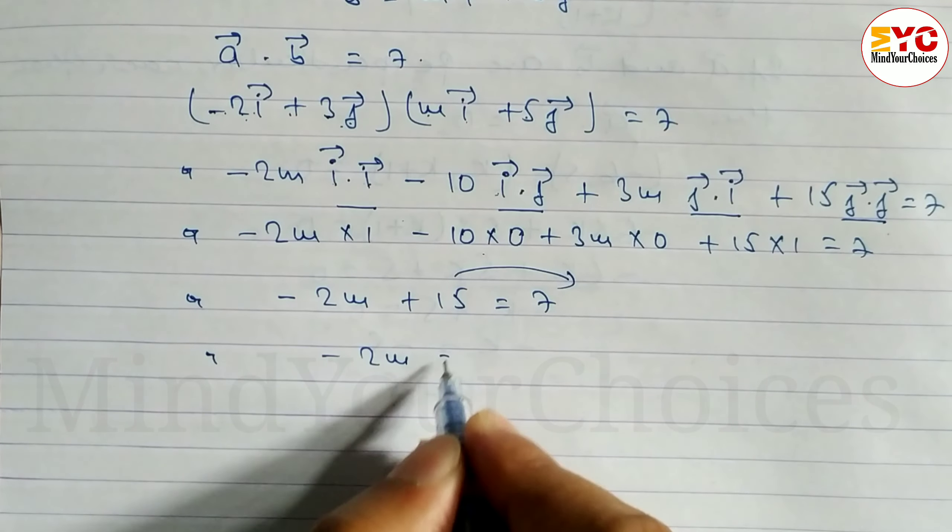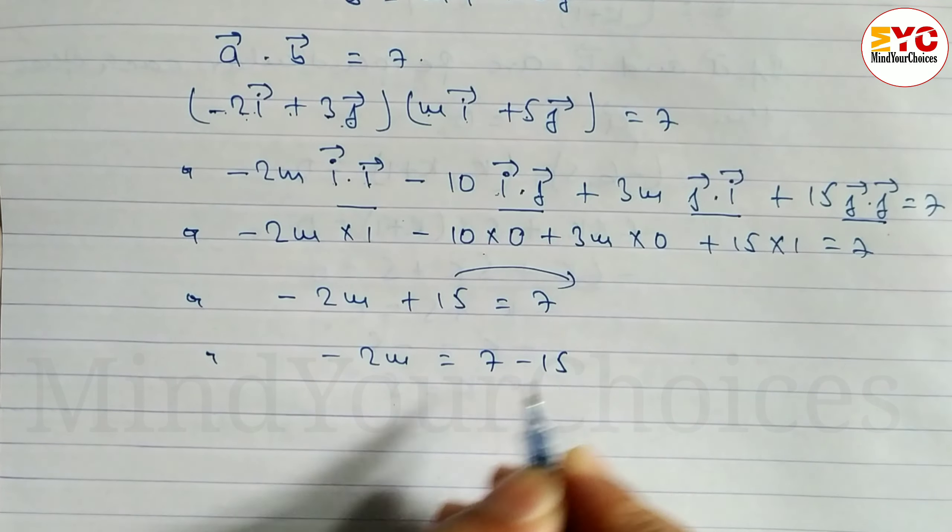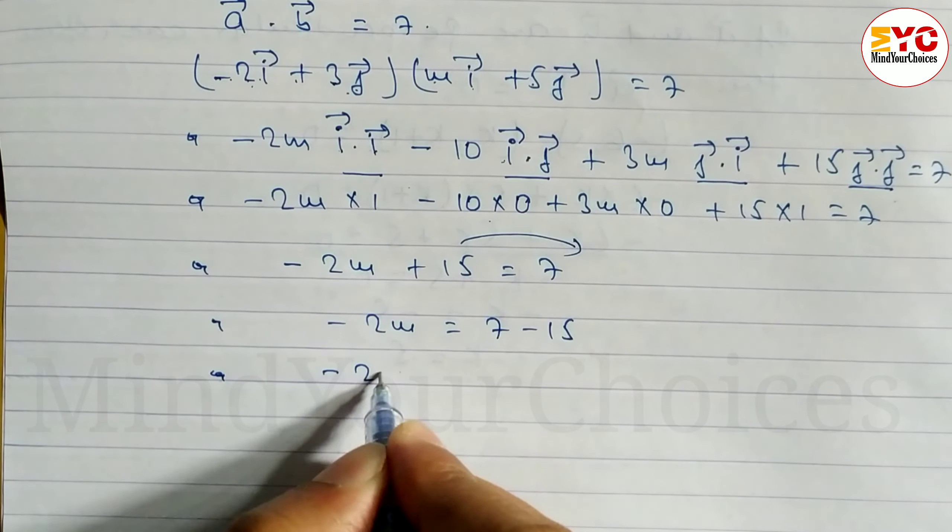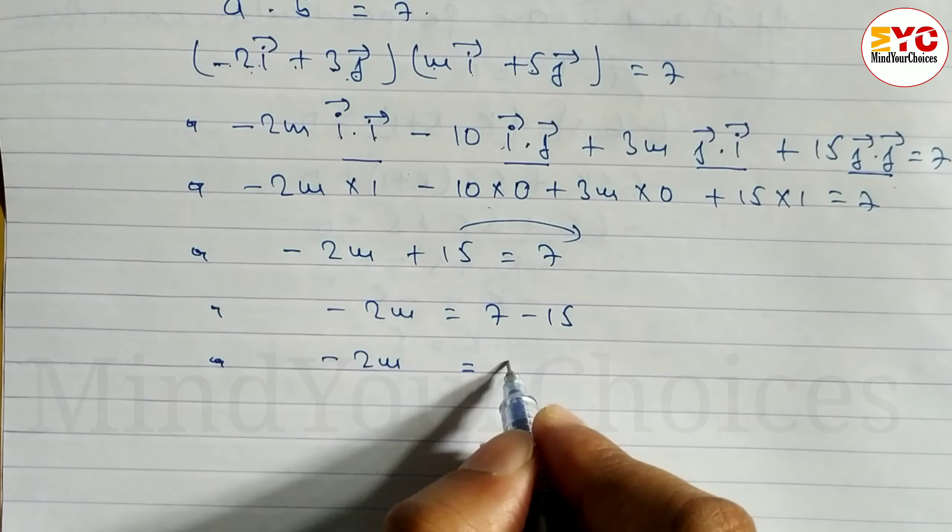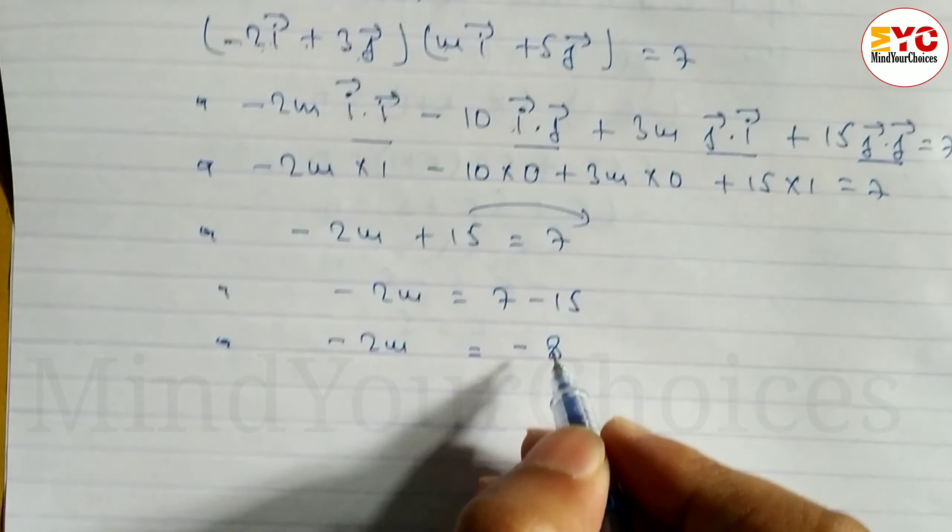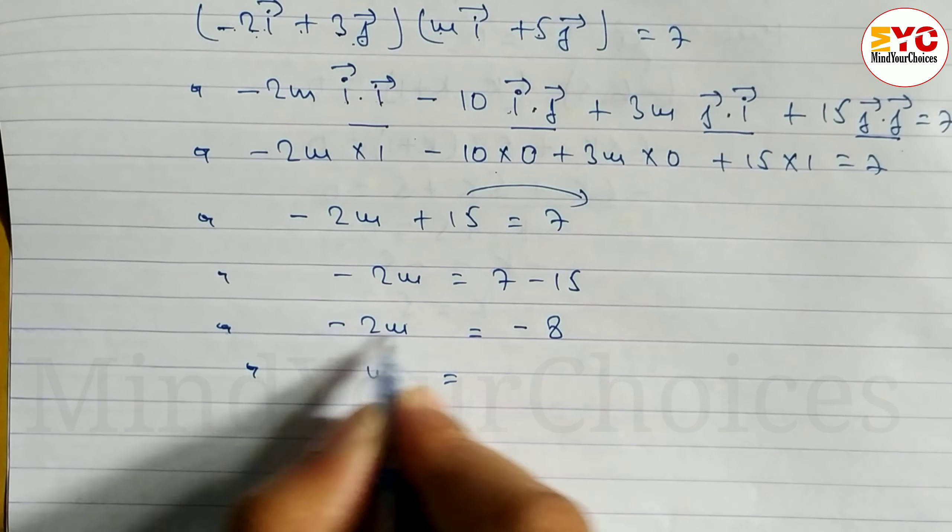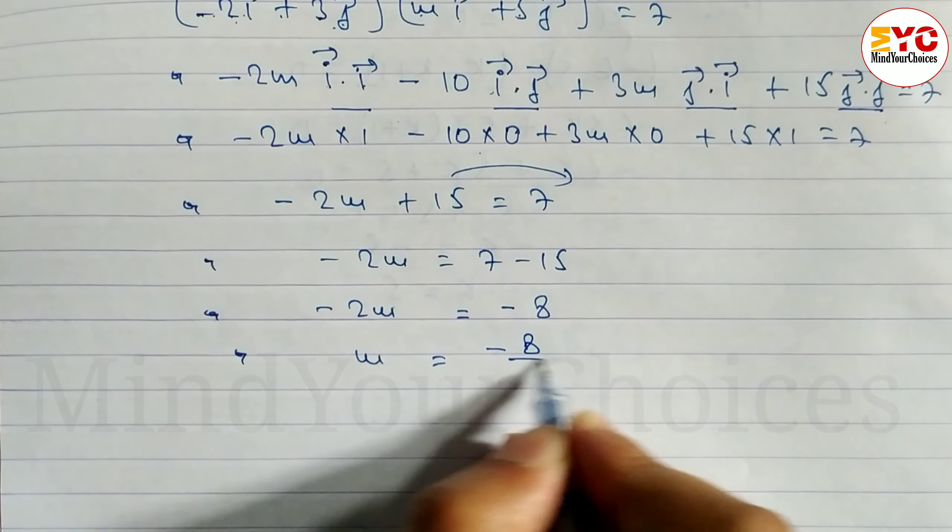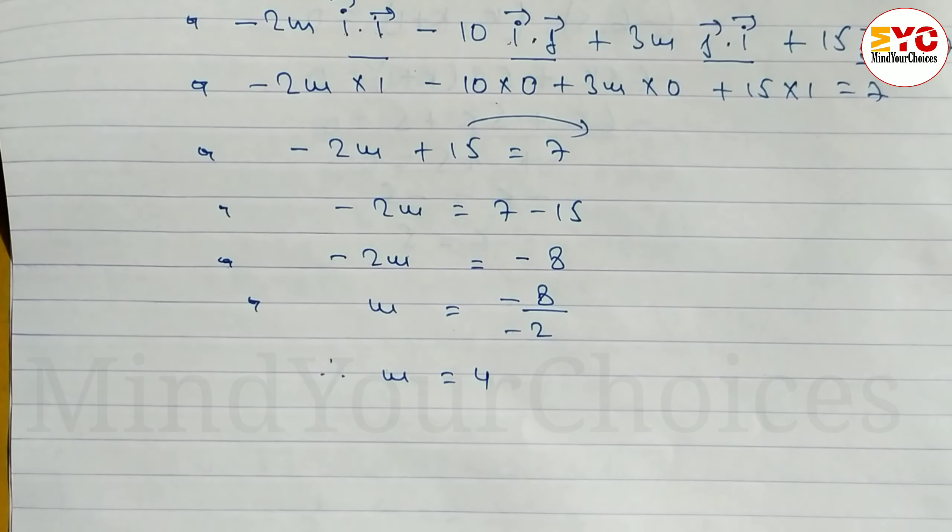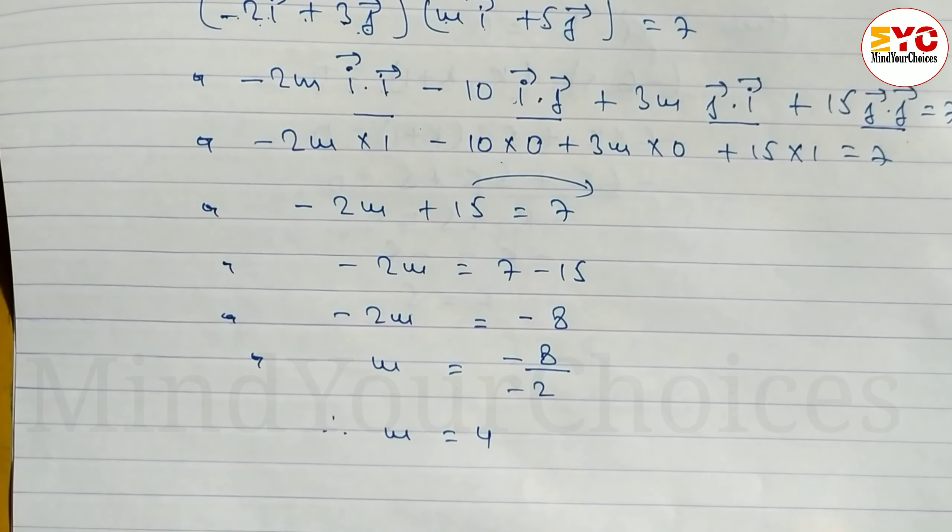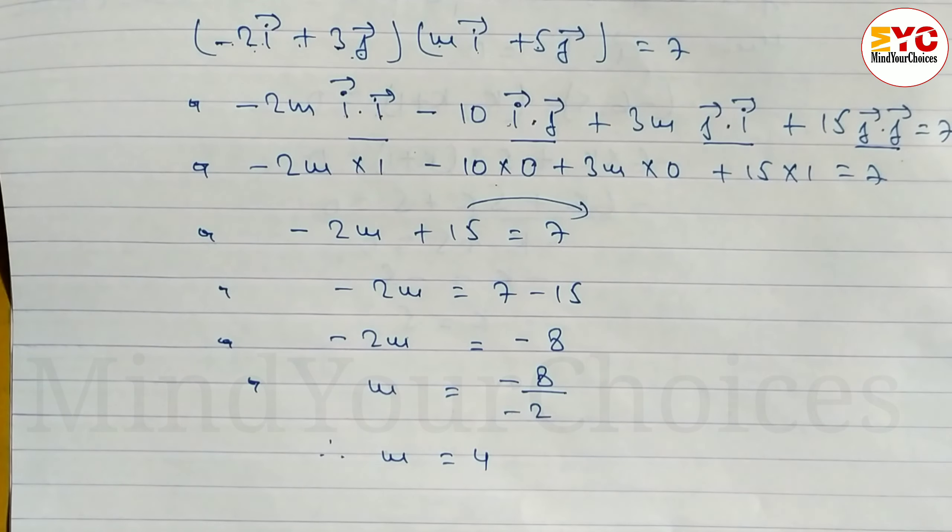-2m = -8. Dividing both sides by -2: m = -8/-2. Therefore, m = 4 is the answer.